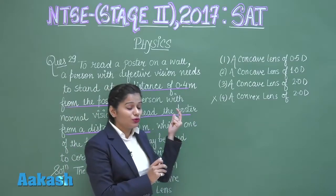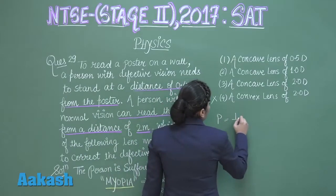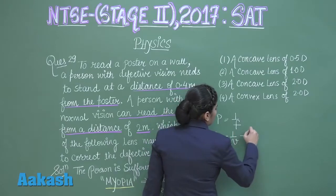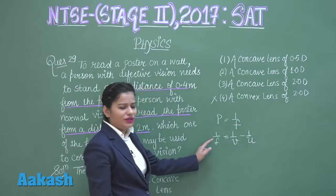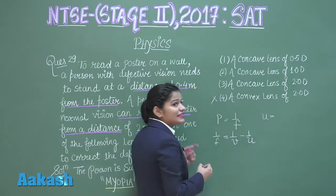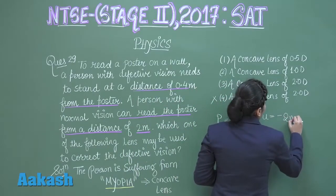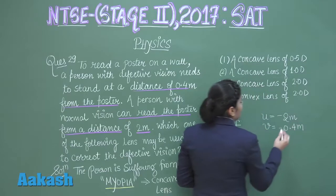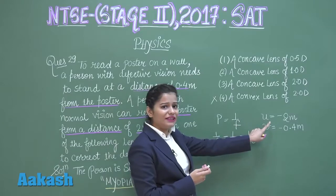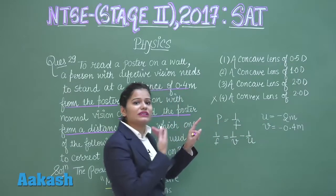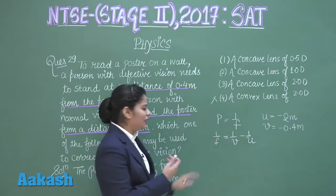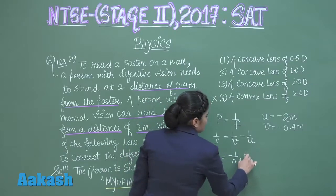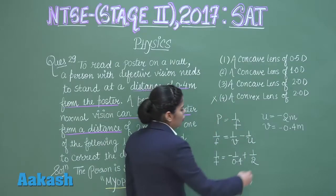So the correct option is either option 1, 2, or 3, since a concave lens is needed to correct myopia. Now let's find out which power of lens will be used. Power is 1 upon focal length, so we will find the focal length using the lens formula: 1/V minus 1/U equals 1/F. U is the object distance — the object is at 2 meters, so U = -2 meters. The image should form at -0.4 meters, V = -0.4 meters. The negative signs follow sign convention.